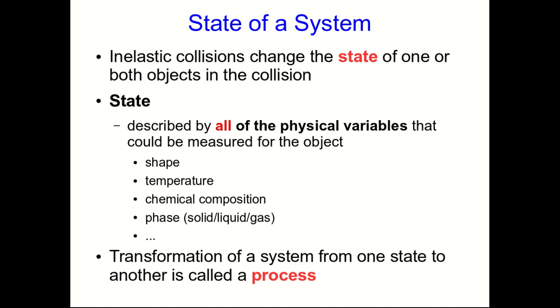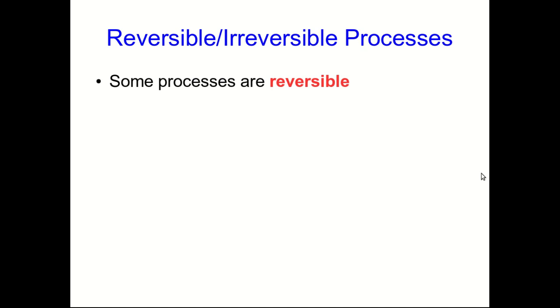Any transformation of a system or an object from one state to another is called a process. We need to distinguish between two very different types of processes.